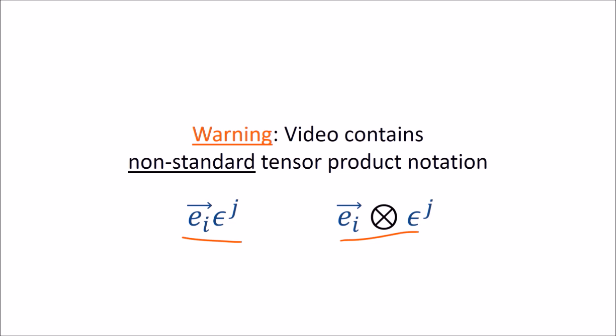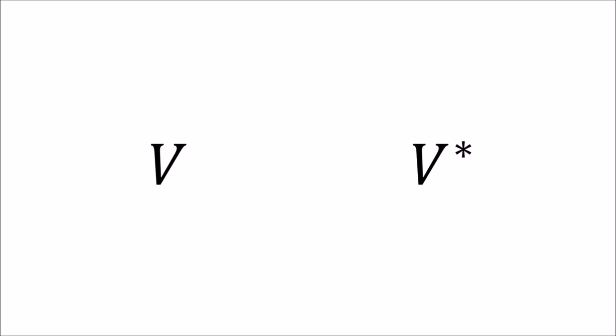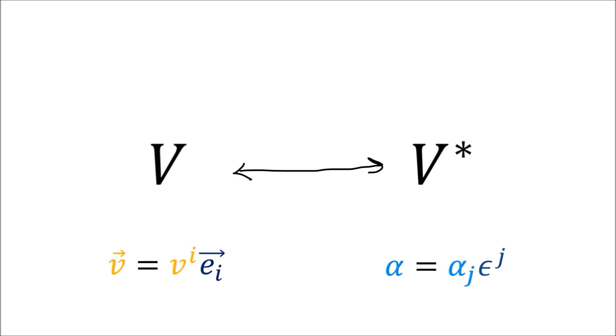At this point we're pretty familiar with the vector spaces V and V star. V is where vectors live and V star is the dual space where the corresponding co-vectors live. So one question we can ask is: is there any meaningful way that we can take a vector in V and find its partner in V star?